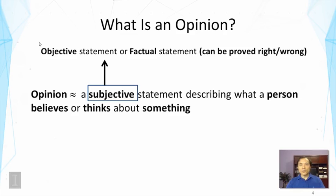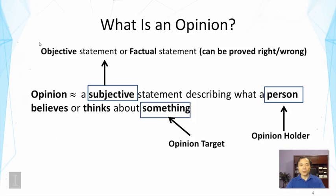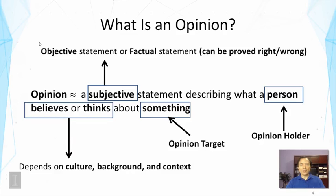Opinion is a subjective statement. Next, let's look at the keyword 'person,' which indicates there's an opinion holder — the opinion is held by someone. There is also 'something,' which is the target of the opinion. And 'believes or thinks' implies that the opinion would depend on the culture, background, and context in general, because a person might think differently in a different context. People from different backgrounds may also think in different ways. So this analysis shows that there are multiple elements we need to include in order to characterize an opinion.